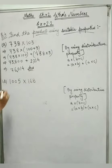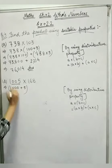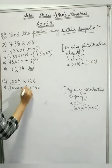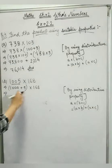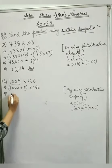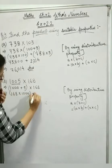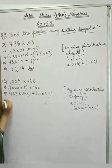Now part B: 1,005 into 168. Now we distribute this as 1000 plus 5 into 168. Using distributive property a into (b+c): 168 into 1,000 plus 168 into 5.